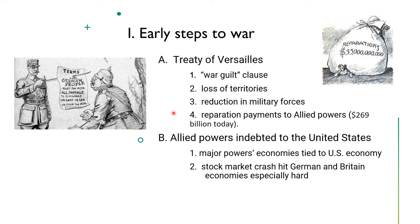The Allied Powers were all indebted to the United States because of borrowing money and buying war materials during World War I. So the major powers' economies were tied to the U.S. economy, so that in 1929, when the stock market crash hit, German and British economies were especially hard hit.